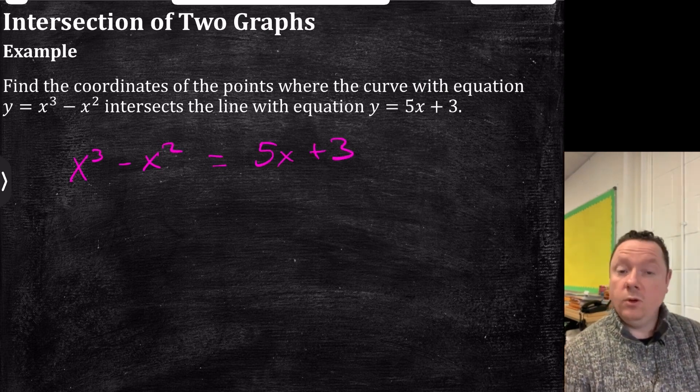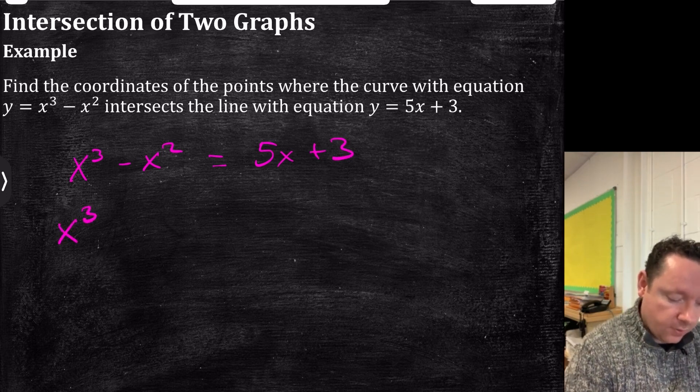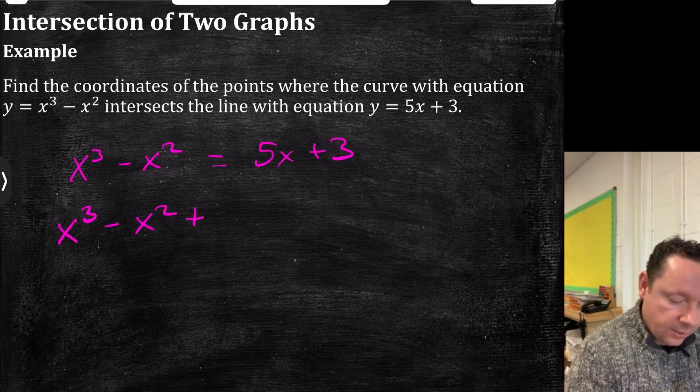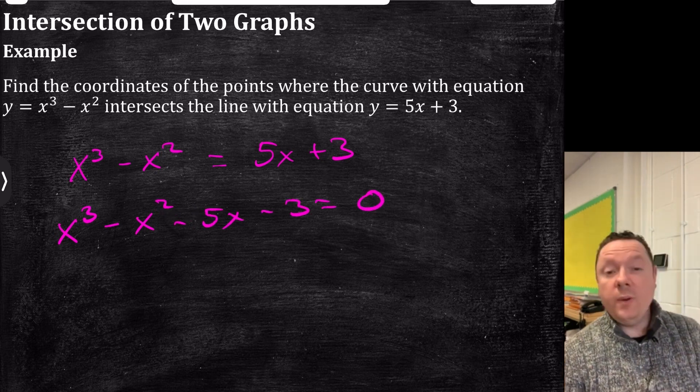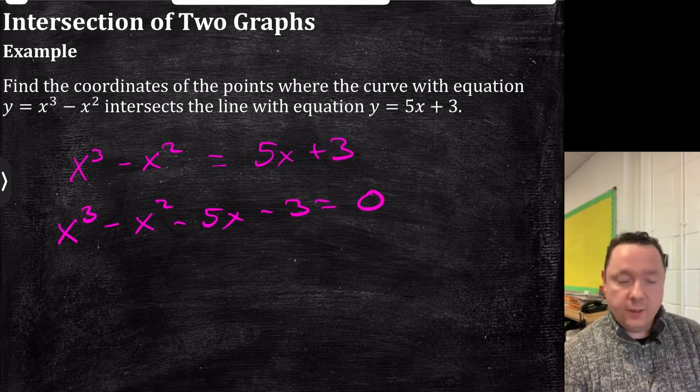The point of intersection or points. So that is a cubic, so we need to make it equal to zero. Anything above a squared. So that's minus 5x minus 3 equals zero. So we've got a cubic to solve, so we need to find the factor. To find the factors, we'll try 1, try minus 1, 2, minus 2, and so on.